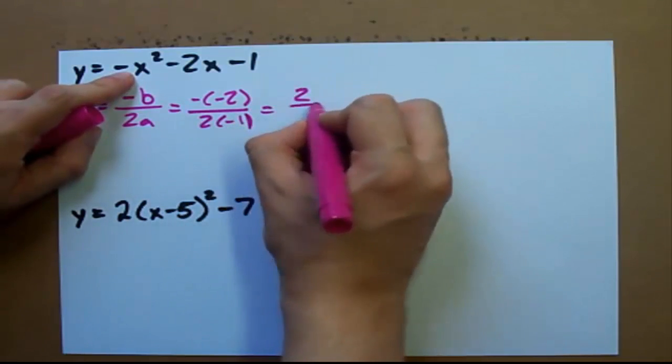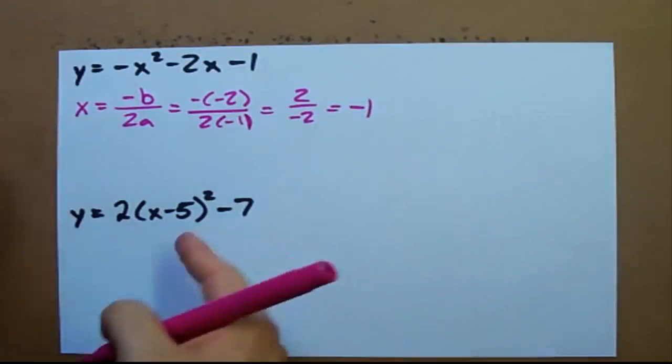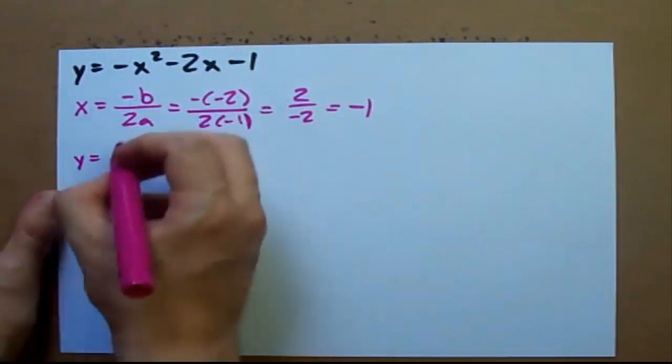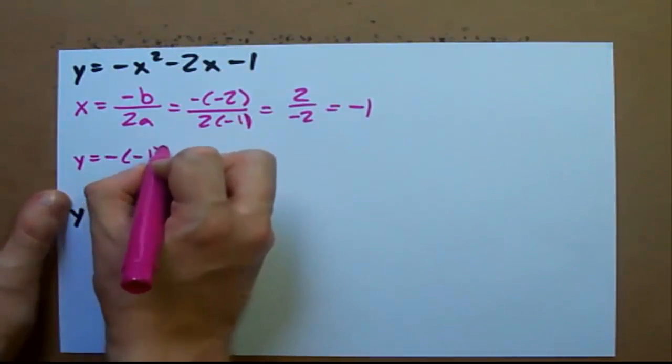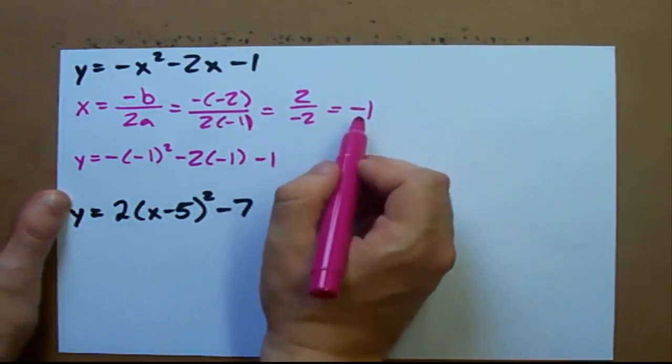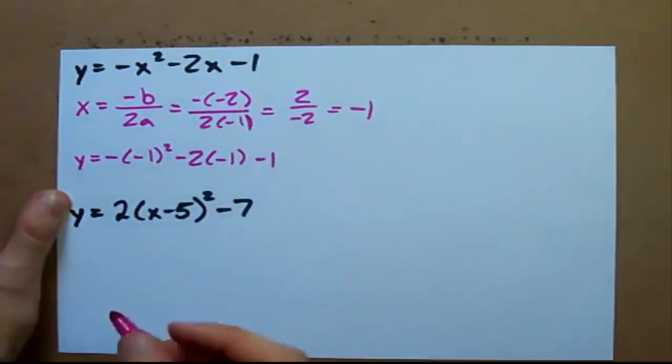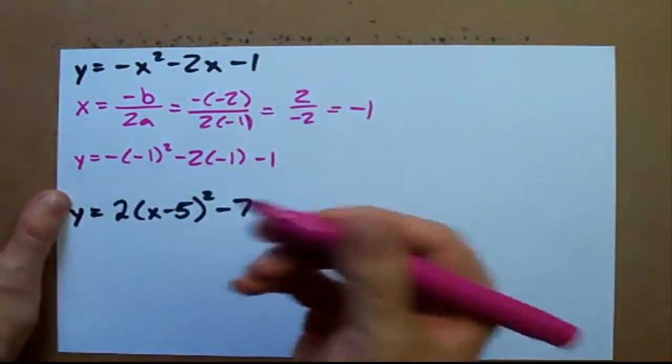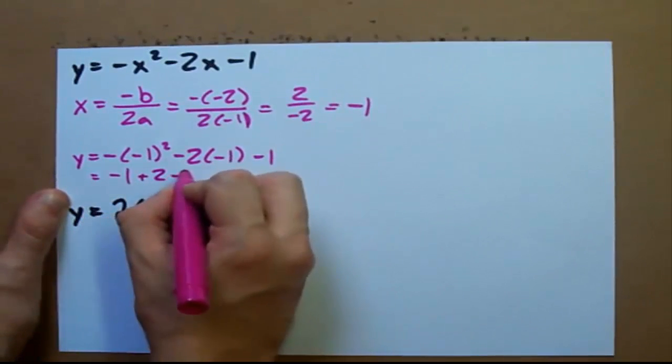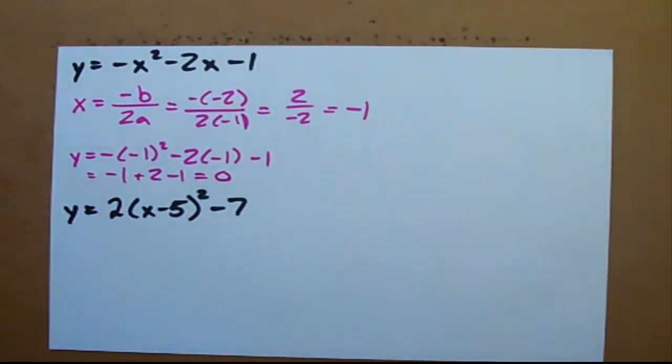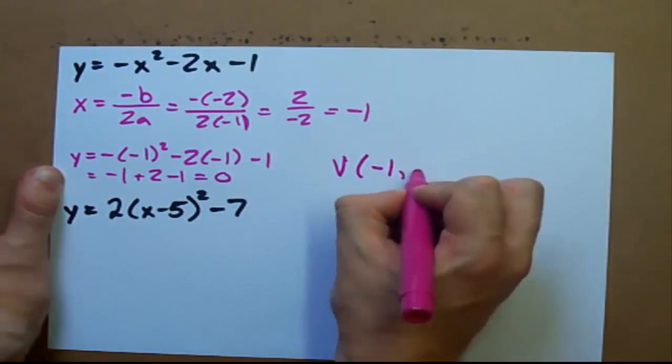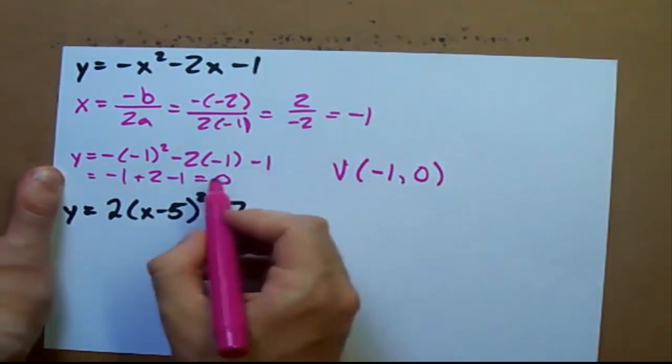This gives me 2 divided by negative 2, turns out to be negative 1. It's the x coordinate of the vertex. Then we plug that back into the equation: negative negative 1 squared minus 2 times negative 1 minus 1. See, we just plugged in negative 1 everywhere there was x. Calculate this, you can use a calculator if you want. I get negative 1 plus 2 minus 1. I get 0. So my vertex is at negative 1 and 0.